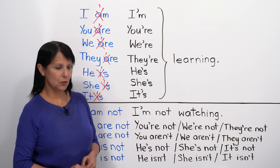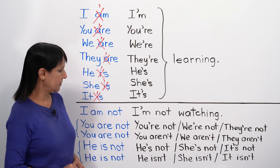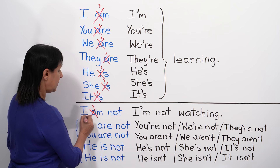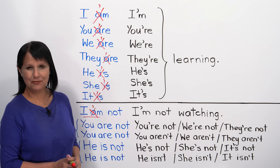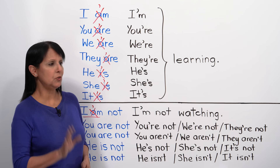We can also use contractions in the negative. Instead of 'I am not,' we can say 'I'm not' — we contracted 'I am' and added 'not.' For example: 'Are you watching TV? No, I'm not watching.' For 'you are not,' there are two possibilities: 'you're not' or 'you aren't.' Both are correct.